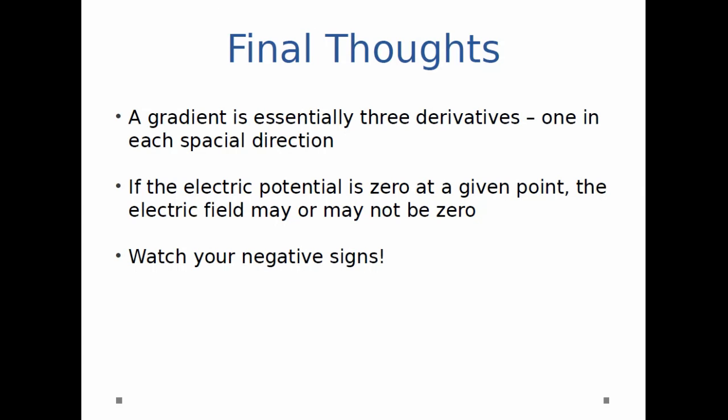So just a few final thoughts. A gradient is essentially three derivatives, one in each spatial direction, as you saw in this example. And hopefully you notice that just because the electric potential is zero at a given point the field may or may not be zero. In this case at the origin the electric potential is zero if you plugged in zero zero zero, but the field is minus eight newtons per Coulomb in the x-hat direction. And finally watch your negative signs. Negative signs will come back and trip you up all the time, so it's good to double-check that your math is correct.